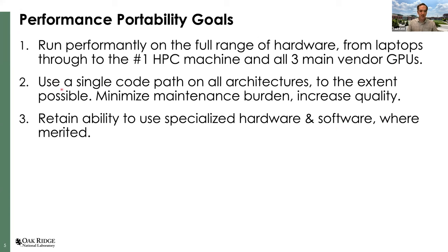What are our goals on the software side? First, a number-one goal is to be able to run performantly on the full range of hardware — from a student laptop with an APU all the way through to the number-one HPC machine, and importantly on all three main vendor GPUs. That leads to our second goal: to the extent possible, we really want to have a single code path on all architectures, which will reduce our ongoing maintenance burden, give us fewer test configurations, and result in higher quality code.